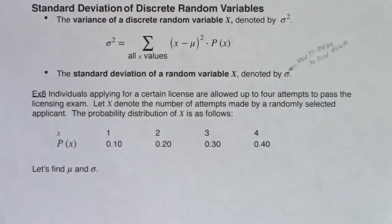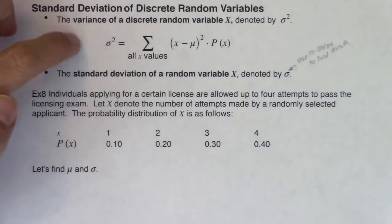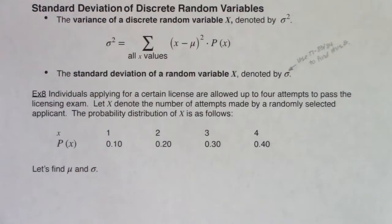So let's work on how we find this. And we're just going to take a hard pass on that formula today. Here we go. Individuals applying for a certain license are allowed up to four attempts to pass the licensing exam. Let x denote the number of attempts made by a randomly selected applicant. The PDF of x is as follows.